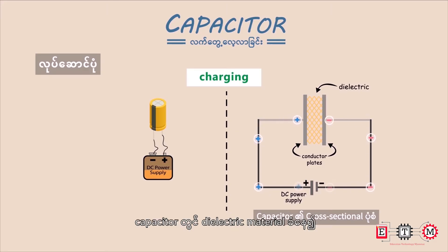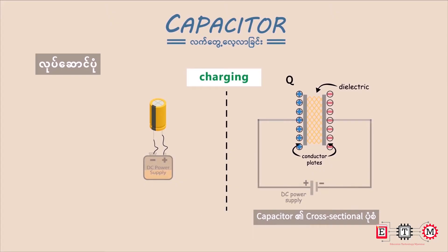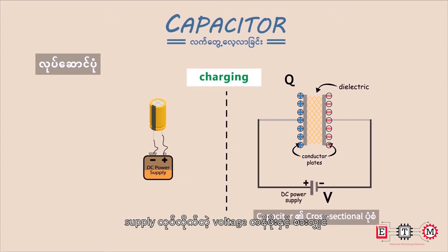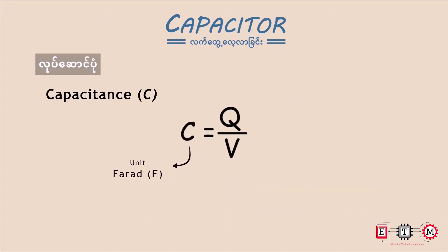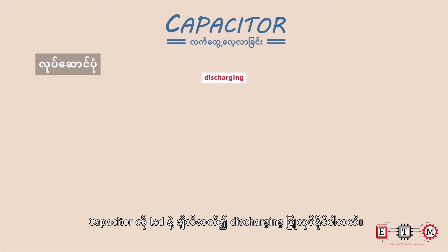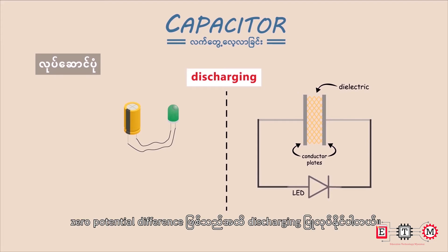Electrical charges and electrostatic energy can be stored. When power supply is given, the capacitor charges. The capacitor stores energy. When charging, there is a voltage difference. When discharging, the voltage difference becomes zero and discharging occurs.